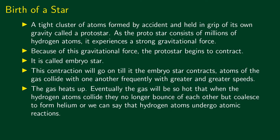It is a cluster that forms a protostar. Gravity forms a cluster of a large number of hydrogen atoms. A strong gravitational force causes the gravitational contraction; the protostar begins to contract. This stage is called an embryo star. When the protostar begins to contract, it is called an embryo star.